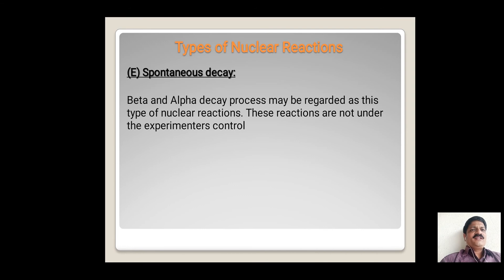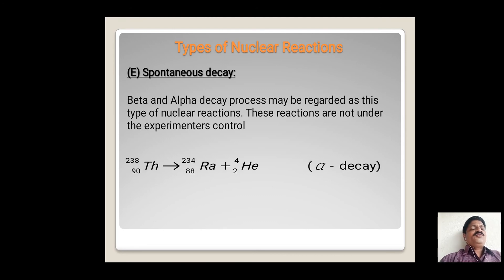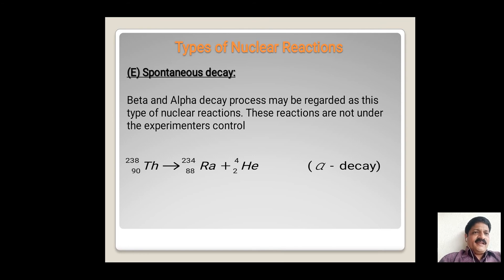The next type of nuclear reaction is spontaneous decay. Beta and alpha decay processes may be regarded as this. There are two types: alpha decay and beta decay. For alpha decay, thorium spontaneously emits radium and helium — that is, thorium, a heavy nucleus, splits into two lighter nuclei: radium and helium.